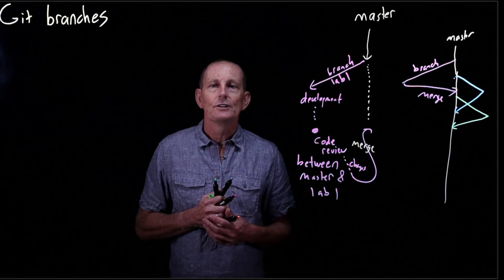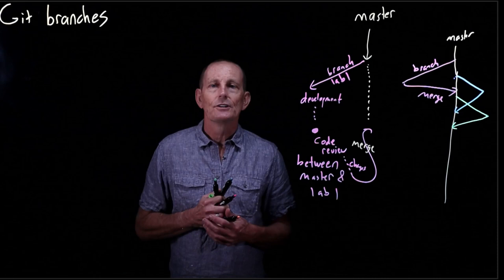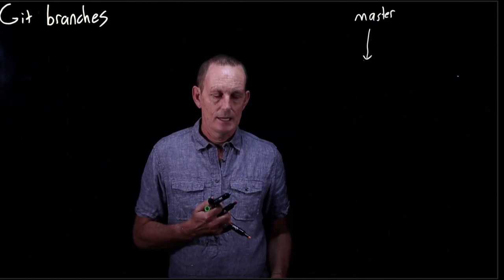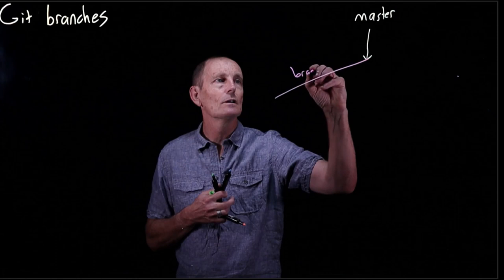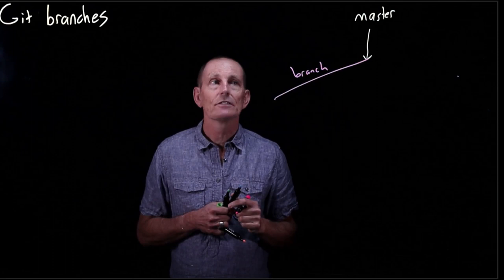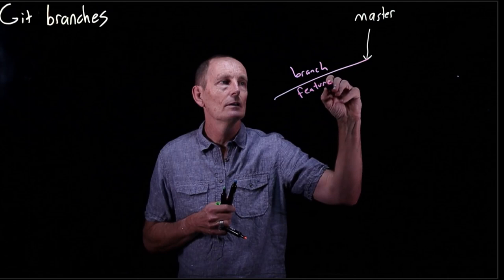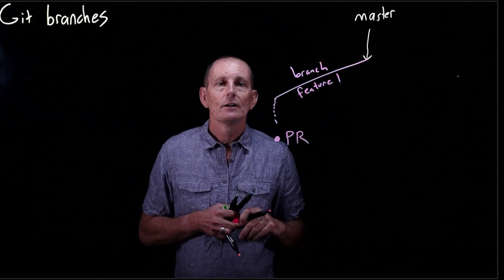So this is how master branch works. All right. So let's say I have gone ahead and created a branch. And what I am working on is a particular feature. So I'm working on feature one. And I get to a particular point.